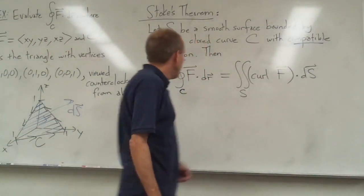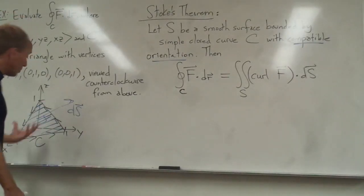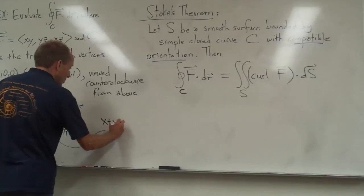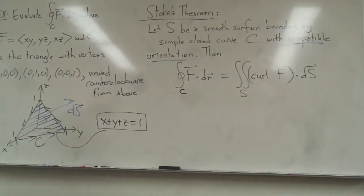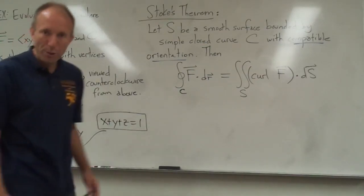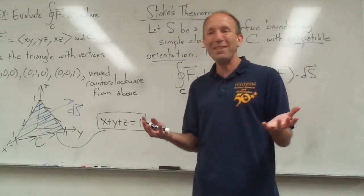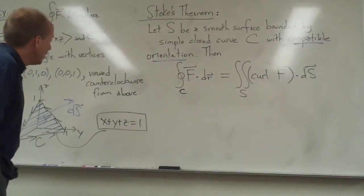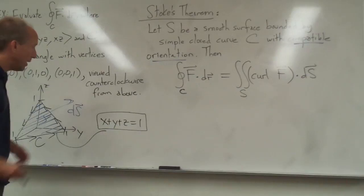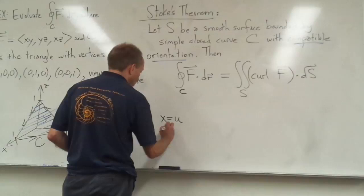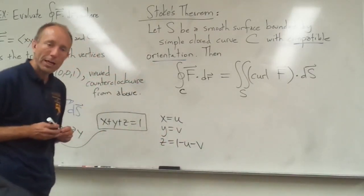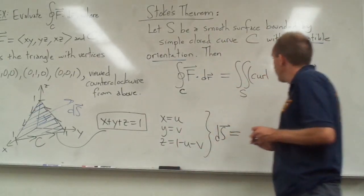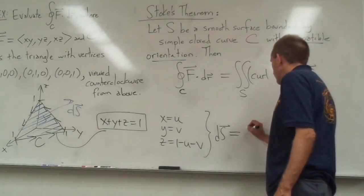We have a few things to do: find the curl, and figure out the surface. The surface is just a plane. The equation of this plane is x + y + z = 1, which goes through the points (1,0,0), (0,1,0), and (0,0,1). If given three points, you can always find the equation of a plane — something to review for the final from chapter 11. I can parametrize it: let x = u, y = v, and z = 1 − u − v. Now let's calculate our ds vector — in Stokes' Theorem, that's really just r sub u cross r sub v.